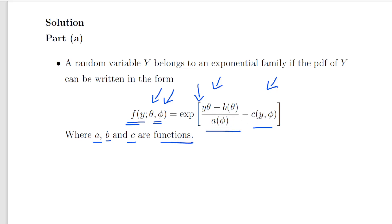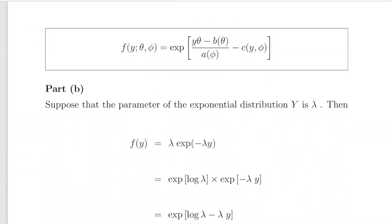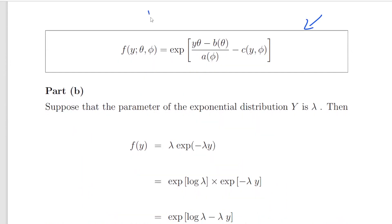Now I have it here again and what we're going to do is apply this to Part b. Suppose that the parameter of the exponential distribution Y is lambda. So essentially this is just the pared down form of it, this is the key part of it here.